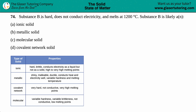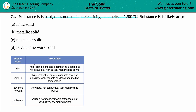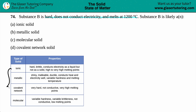Number 74: Substance B is hard, does not conduct electricity, and melts at 1200 degrees Celsius. Substance B is likely — this is a multiple choice question. So is substance B going to be an ionic solid, metallic, molecular solid, or a covalent network solid? We only have three pieces of information: that this substance is hard, it does not conduct electricity, and it melts at 1200 degrees Celsius.